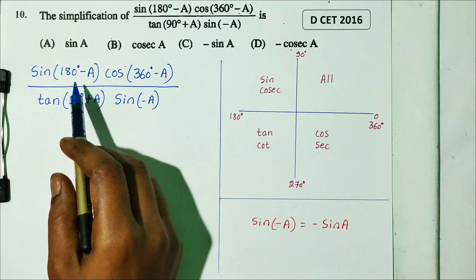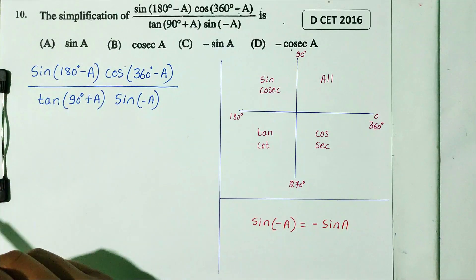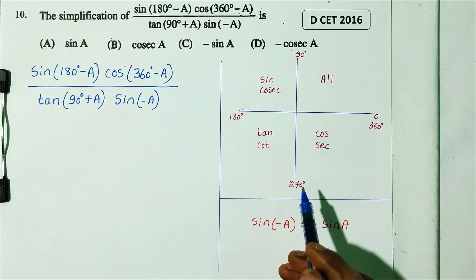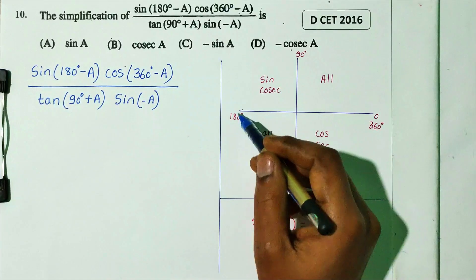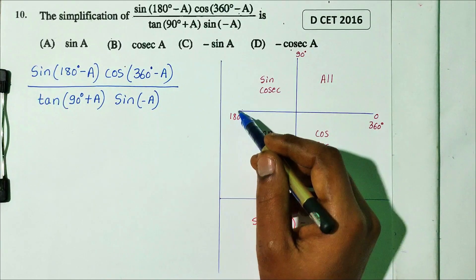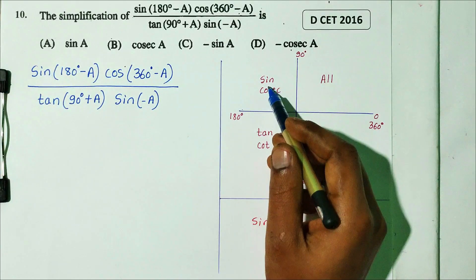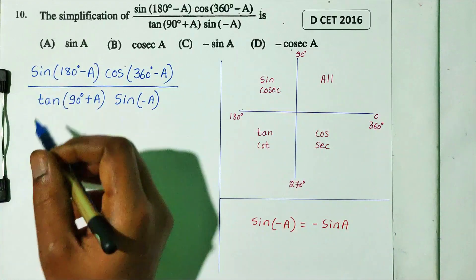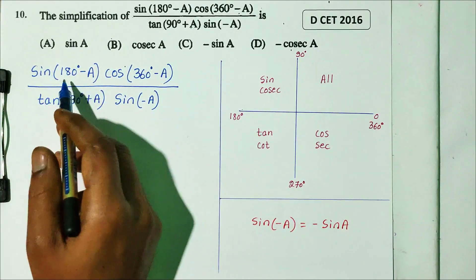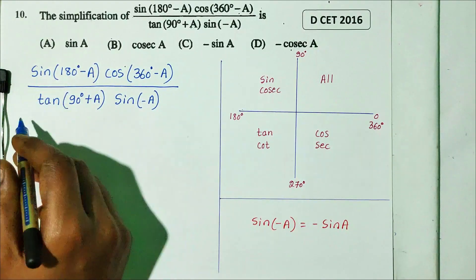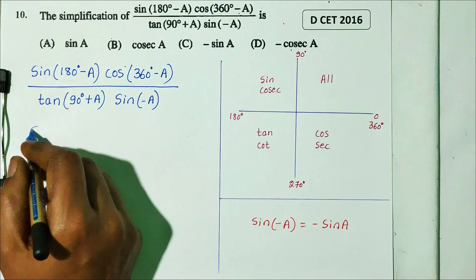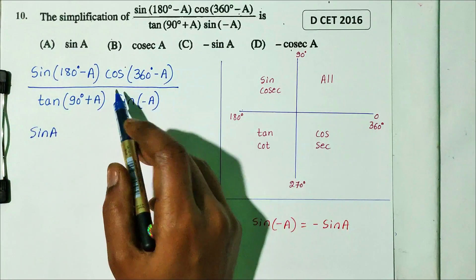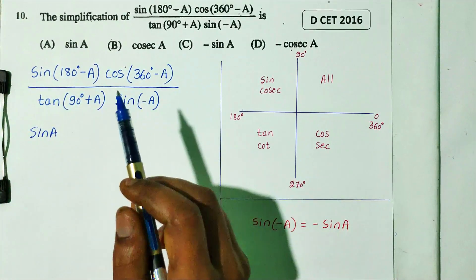Apply allied angle rules. Sin(180 minus A) is in the second quadrant, where sine is positive, so sin(180 minus A) equals sin A.